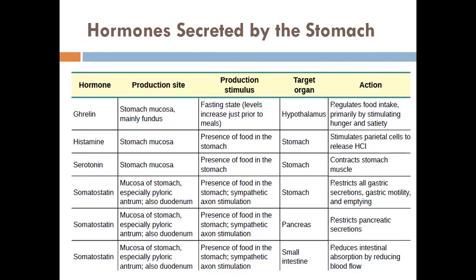Ghrelin is also secreted by the stomach. Ghrelin is produced by ghrelin-producing cells in the mucosa of the stomach, especially the fundus. The stimulus is fasting — when the GI tract is empty, ghrelin-producing cells are stimulated to release a lot of ghrelin. It has an effect on the hypothalamus, especially the hunger center — the lateral hypothalamic nuclei — stimulating it to increase food intake. Ghrelin is referred to as the hunger hormone because it stimulates the hunger center in the hypothalamus.